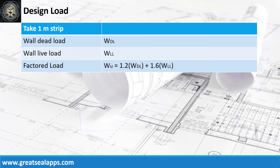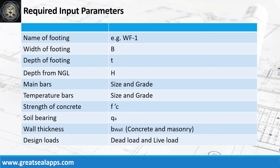Enumerate the input parameters required: the name of the footing (e.g., WF1), width of footing, depth of footing, and depth from the natural grade line.